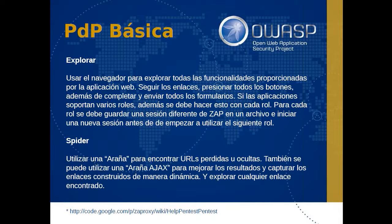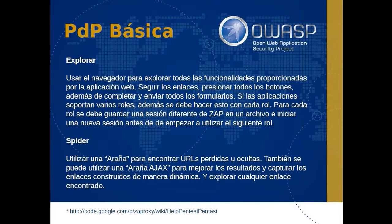ZAP Proxy tiene la capacidad de gestionar diferentes sesiones, guardarlas, generar una sesión persistente — tiene funcionalidades muy buenas para este propósito. En el caso del spider, sería traducido literalmente al español como una araña, y vamos a utilizarlo para encontrar URLs perdidas u ocultas. También se puede utilizar una araña Ajax para mejorar los resultados y capturar aquellos enlaces que se construyen de manera dinámica. Si durante la exploración manual hubiésemos perdido u obviado algún enlace, con el spider podremos encontrar esos enlaces antes no encontrados.